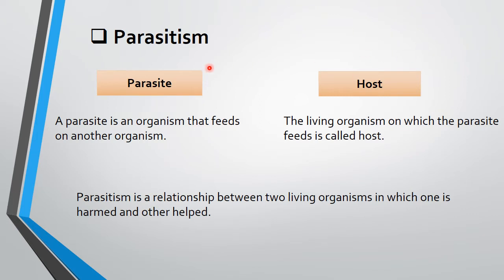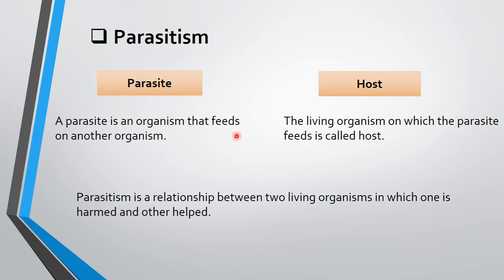The next relationship is Parasitism. Parasitism involves two types of organisms: one is the Parasite and the other is the Host. A Parasite is an organism that feeds on another living organism. The living organism on which the parasite feeds is called the Host. Parasitism is a relationship between two living organisms in which one is harmed and the other is helped.